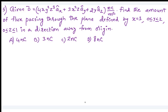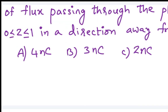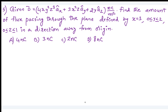Yeah, you can see the question now. The reason electric flux density is given, then find the amount of flux passing through the plane defined by x equal to 3, and y lies between 0 and 2, and z lies between 0 and 1, in a direction which is away from the origin.